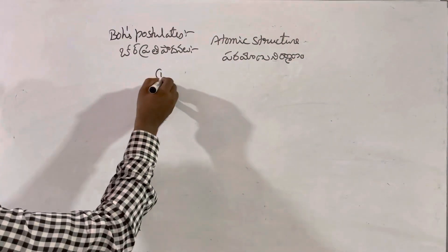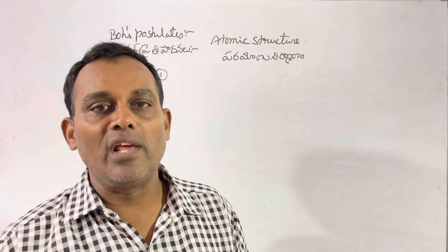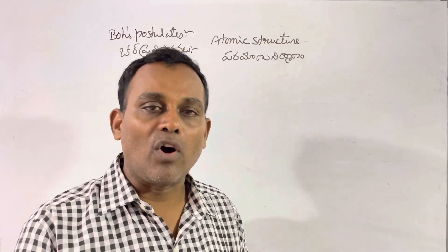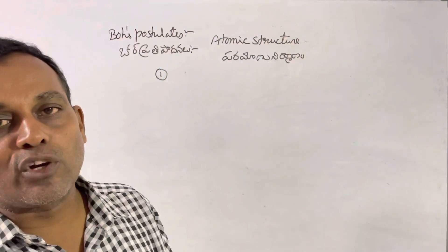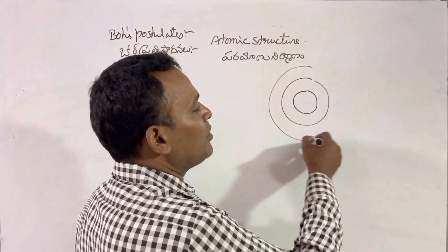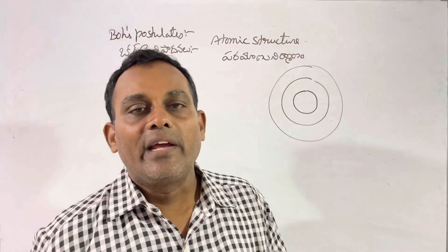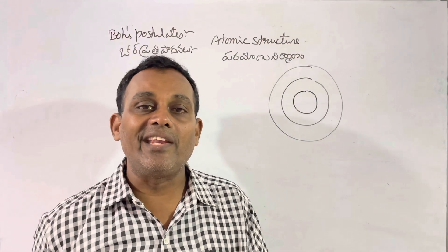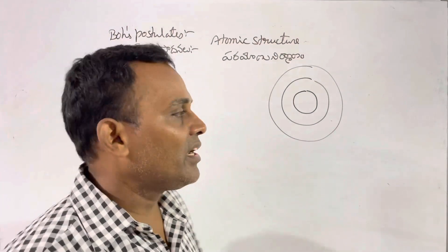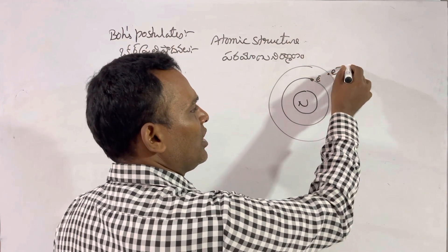The first postulate is that every electron revolves around the nucleus in a circular path, that means circular orbits. When the electron revolves in a particular orbit, it does not gain or lose any amount of energy. That's why the orbits are called stationary orbits.